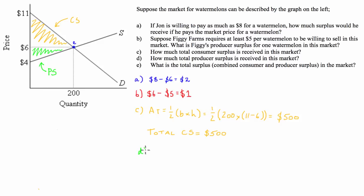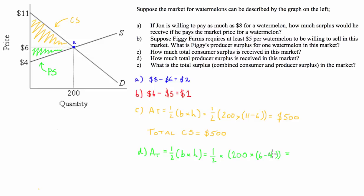The area of the triangle is one-half base times height, which equals one-half times the base — again 200 — times the height, which in this case is 6 minus 4, which equals 2. Two times 200 is 400, and half of that is 200. So the total producer surplus is equal to $200.